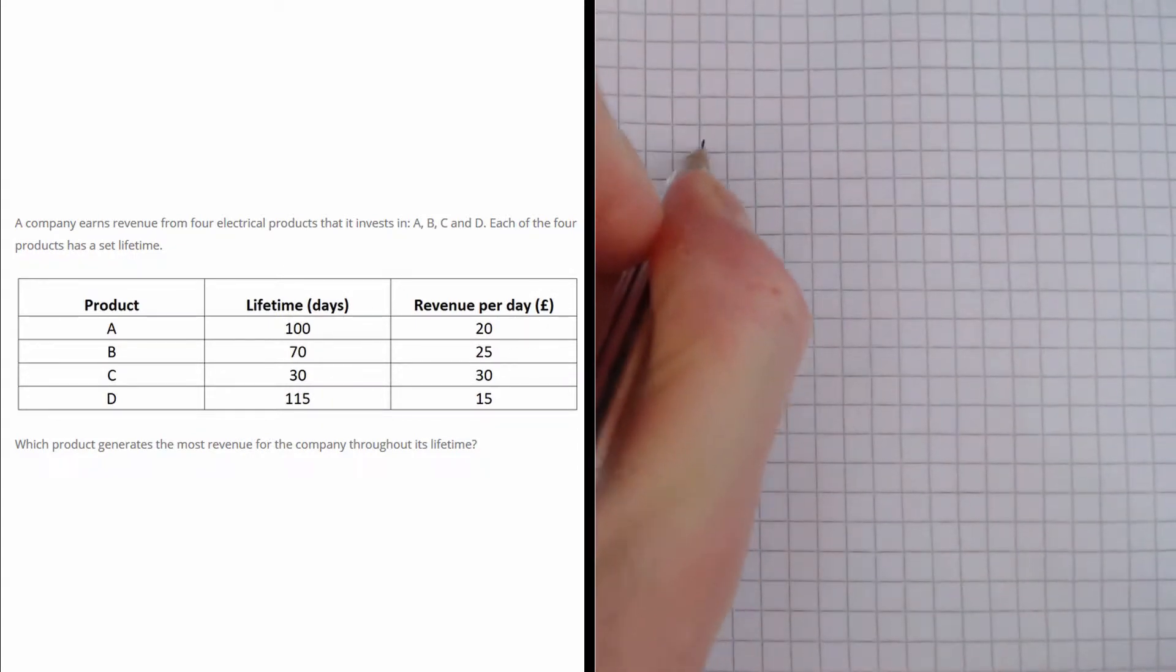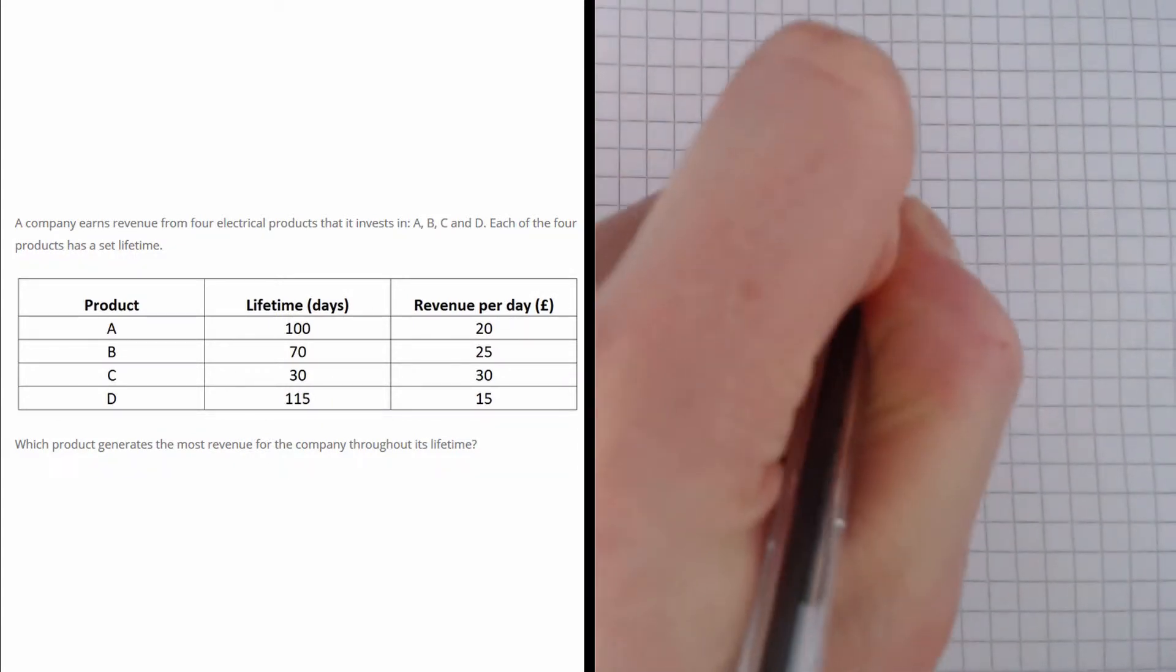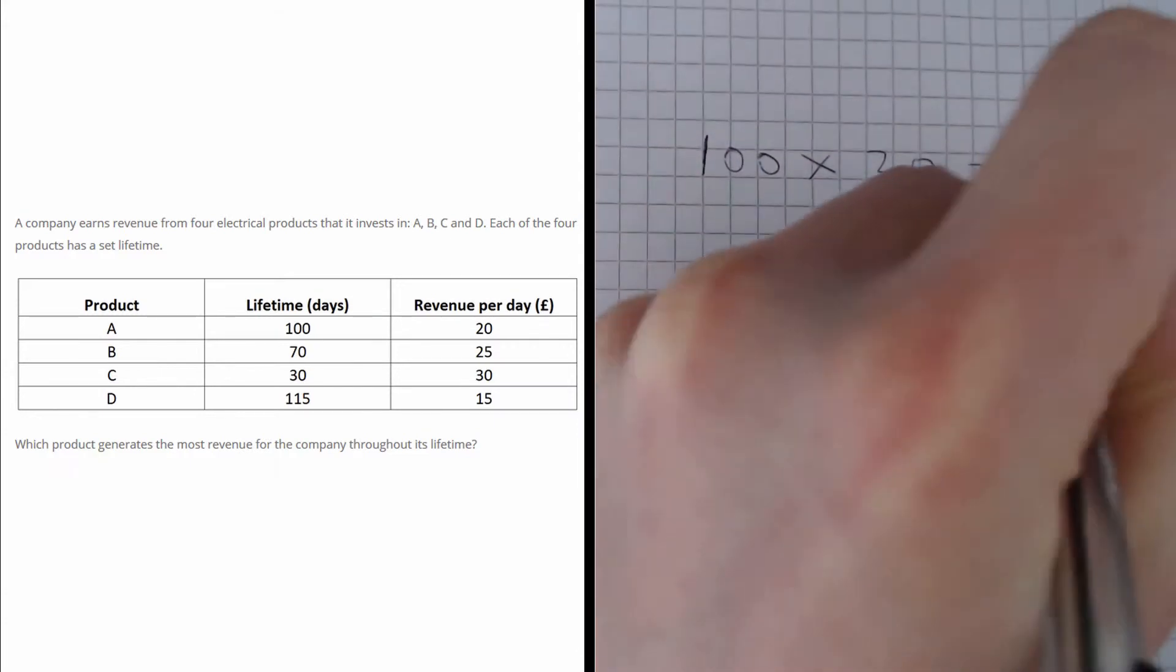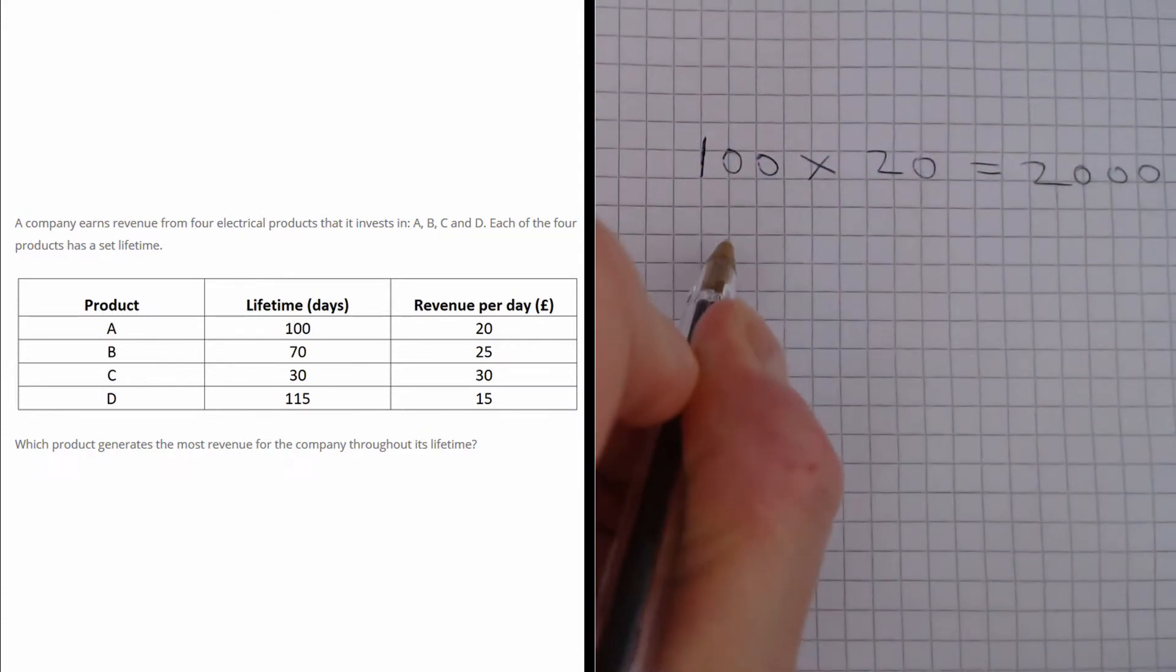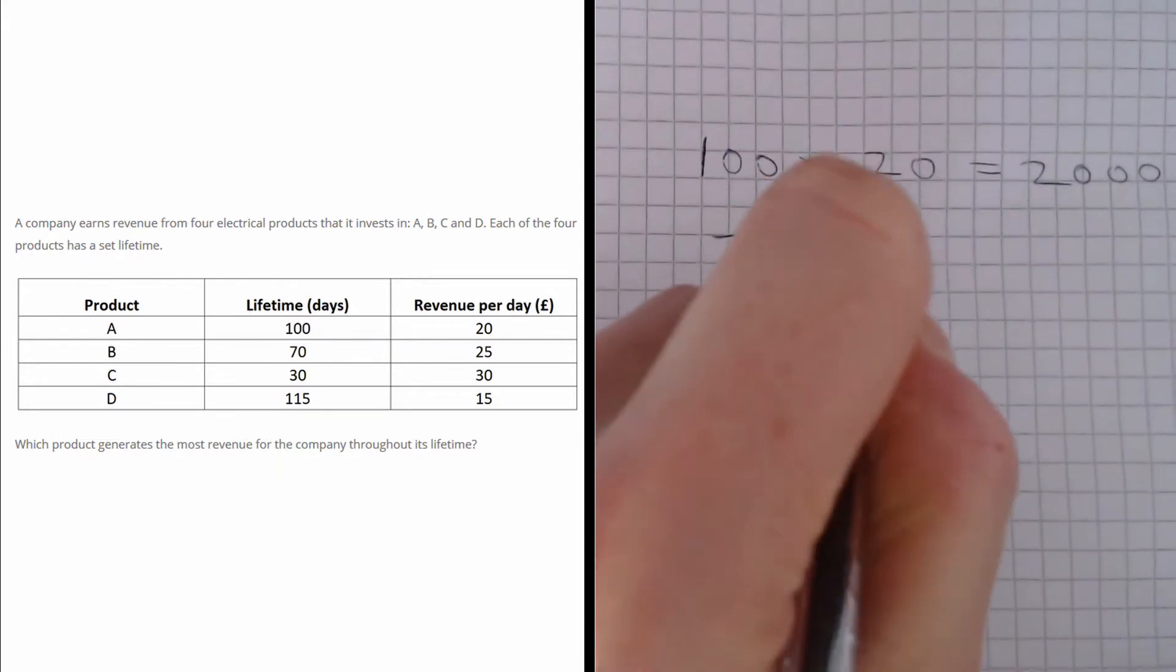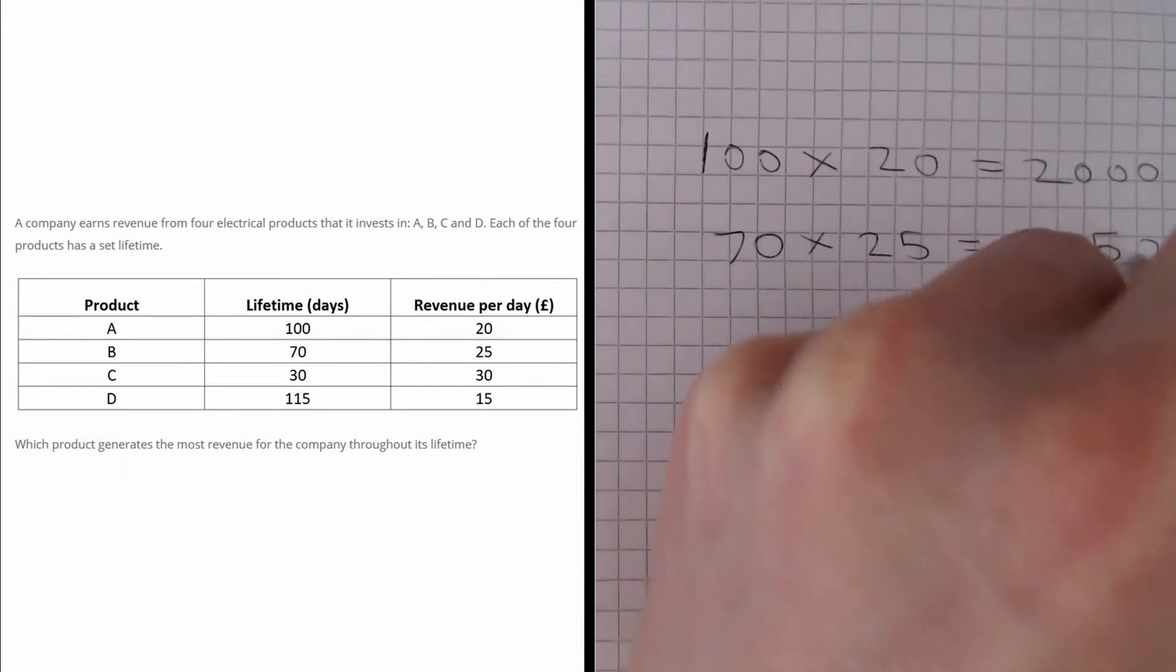So for A, this is going to give us 100 multiplied by 20 which is going to give us 2000. For B, we are going to get 70 multiplied by 25 which will give us 1750.